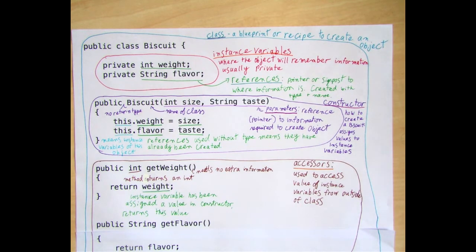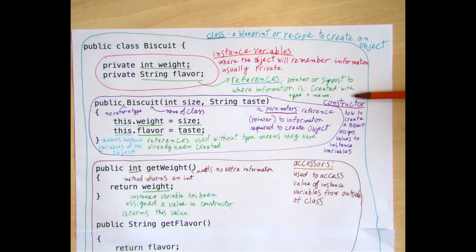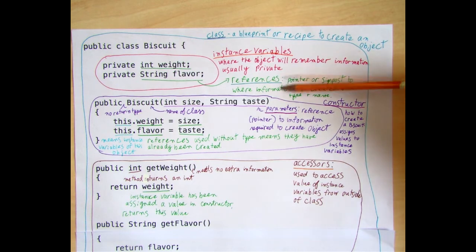If you notice, the weight and the flavor of the biscuit aren't given a value, because how could you know what the weight of every biscuit is and what the flavor of every biscuit is? It's not possible. You might notice that the instance variables look a lot like creating object references — and that's exactly what they are. They're simply creating a space to save that information, not putting information in it yet. They are creating a reference, or a pointer, or you can also think of it as a signpost, to where the information will be.